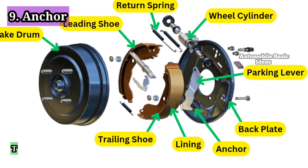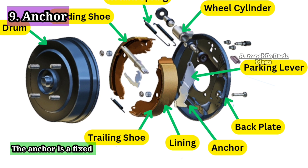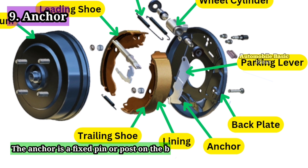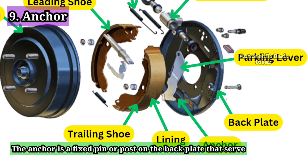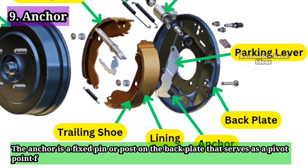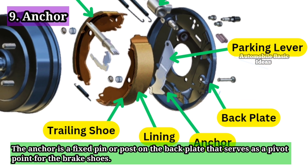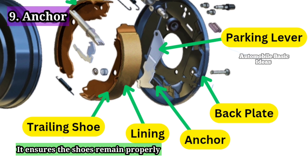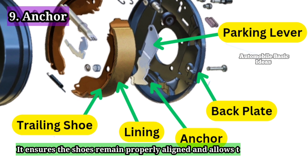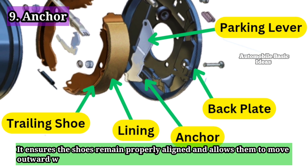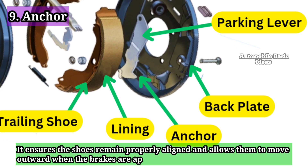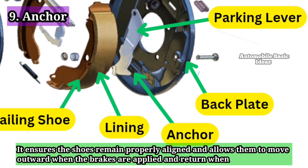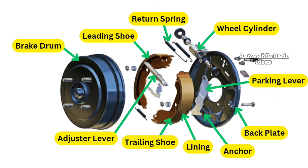9. Anchor. The anchor is a fixed pin or post on the back plate that serves as a pivot point for the brake shoes. It ensures the shoes remain properly aligned and allows them to move outward when the brakes are applied, and return when released.